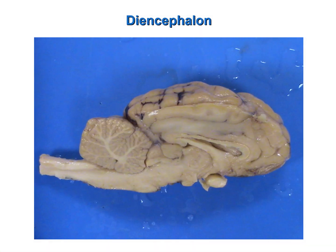On the sheep brain, be able to identify the following structures: here is the thalamus, below the thalamus is the hypothalamus, and this structure here is the pineal body or pineal gland. Again: thalamus, hypothalamus, pineal gland or body.